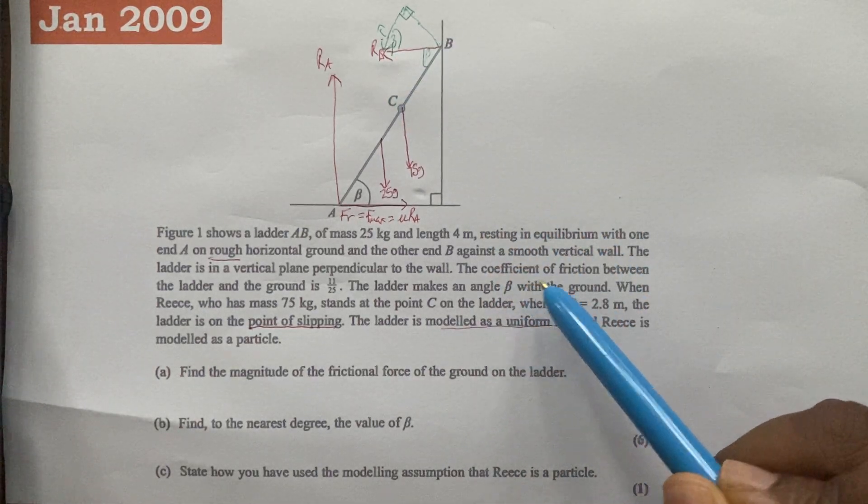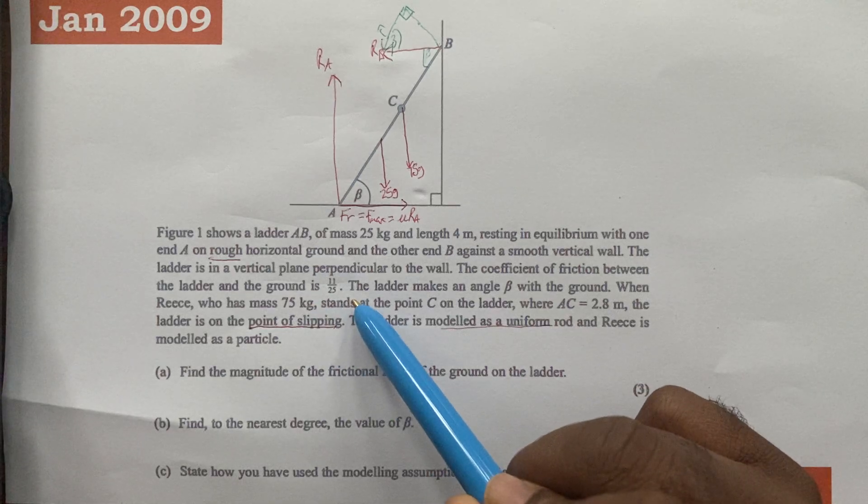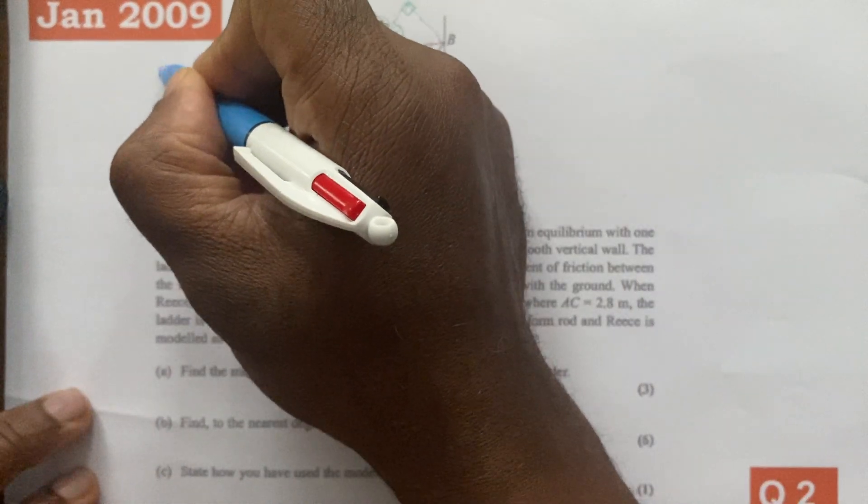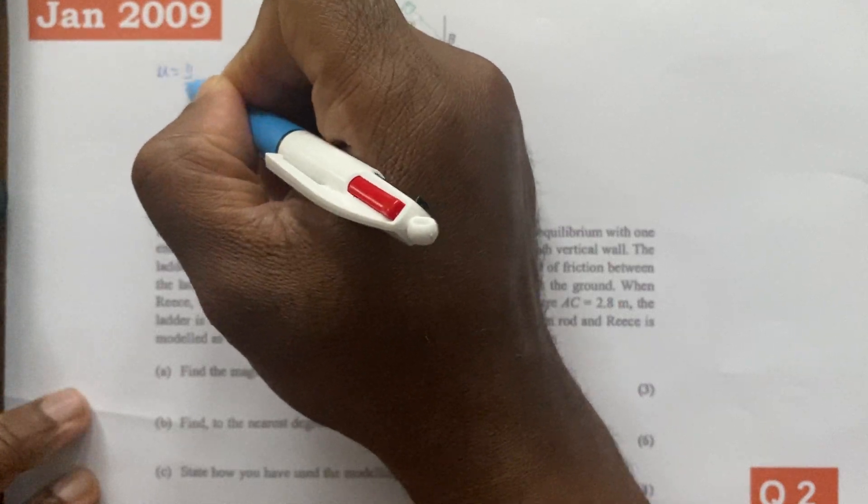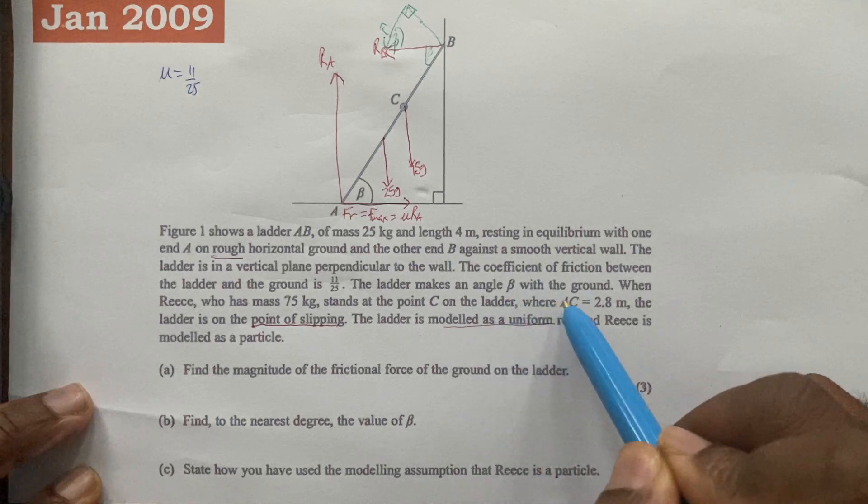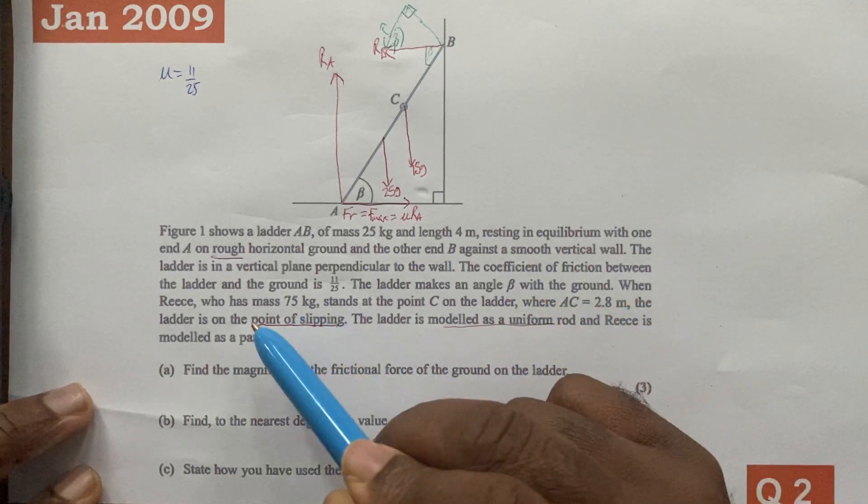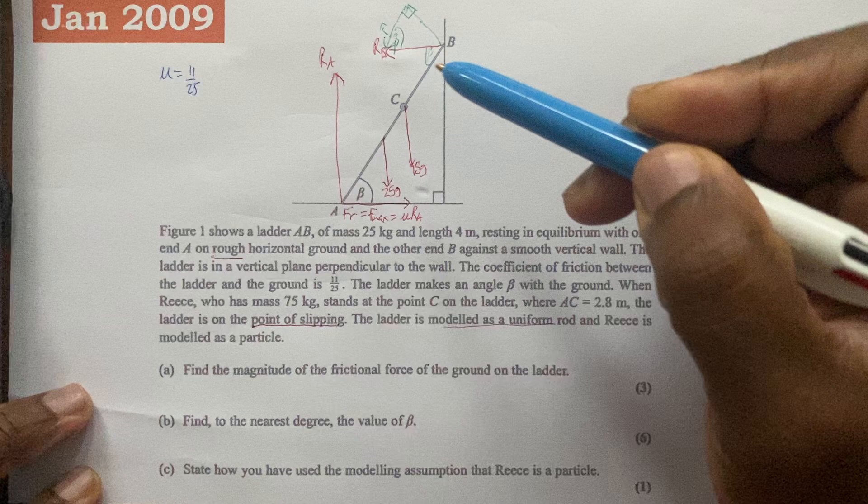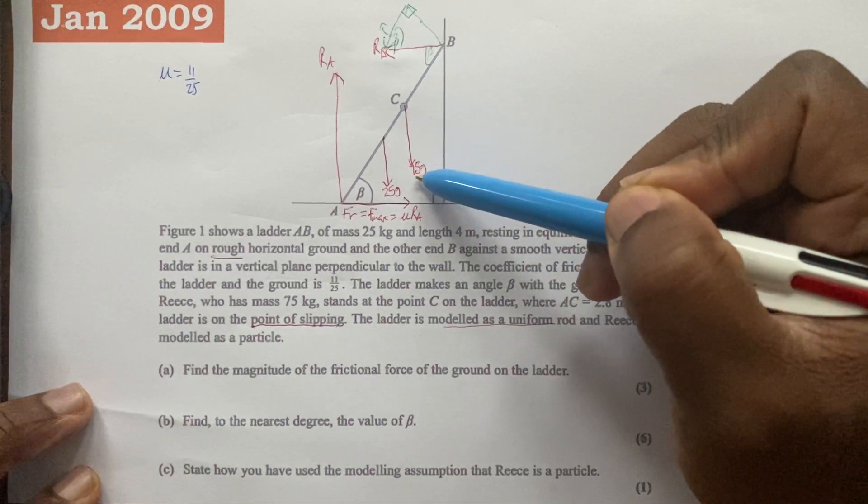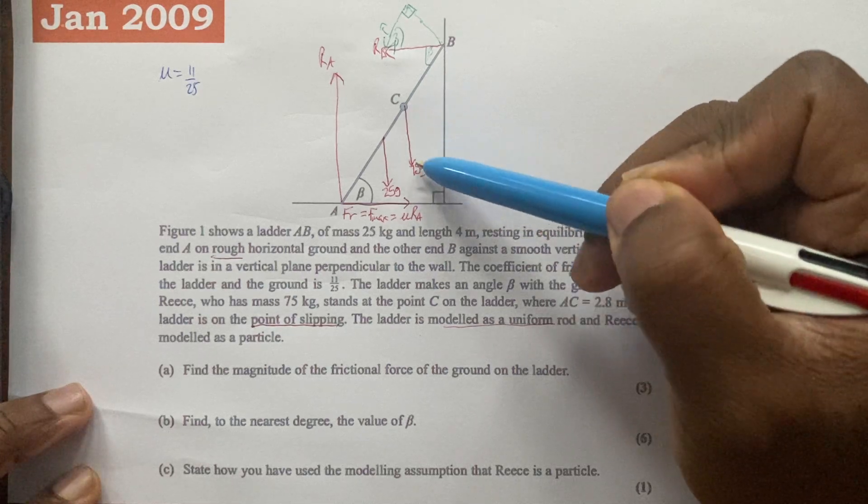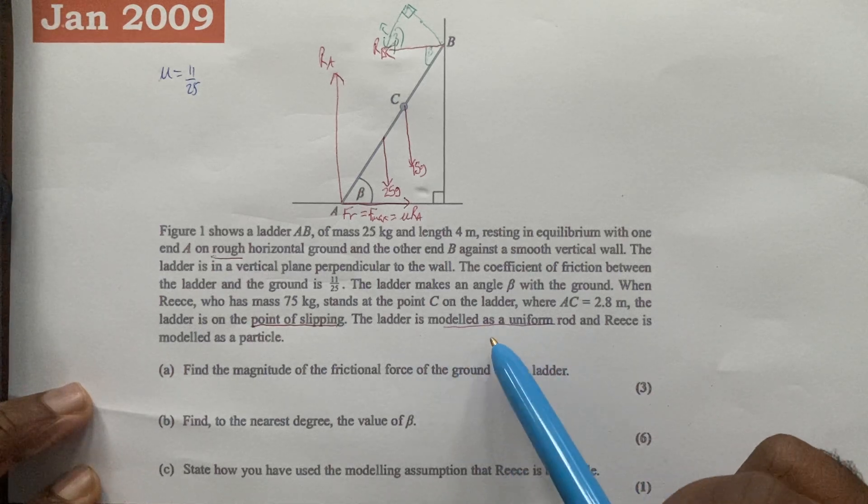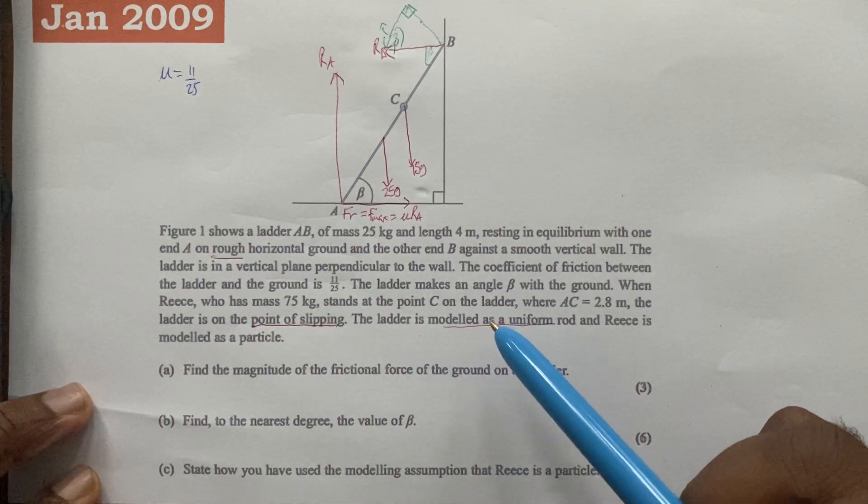The coefficient of friction between the ladder and the ground is 11 over 25, so mu equals 11 over 25. The ladder makes an angle beta with the ground when Reese, who has a mass of 75 kilograms, stands on the ladder. His weight is 75G.